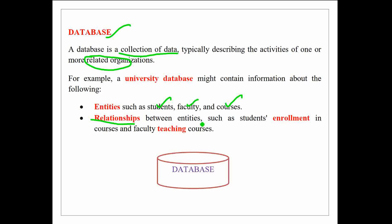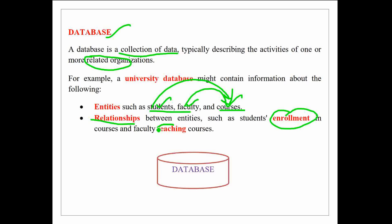Entities are nothing but real world objects that physically or conceptually exist and are distinguishable from other objects. When we take the entities students and courses, a student entity is related to a course entity only when they enroll in the course. Similarly, a faculty is related to a course entity when they teach that particular course.